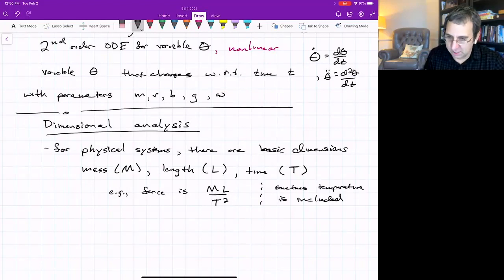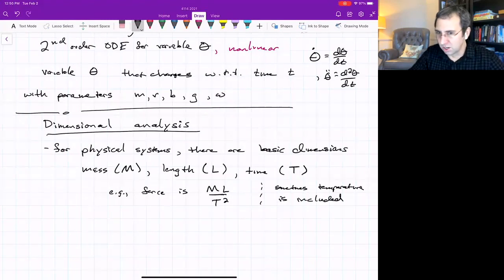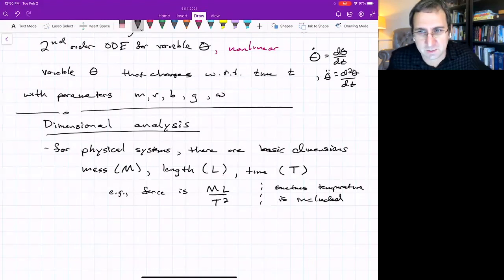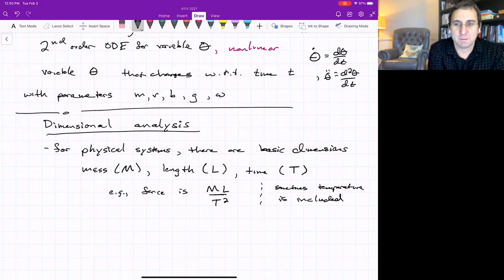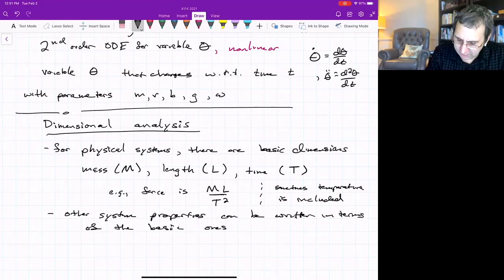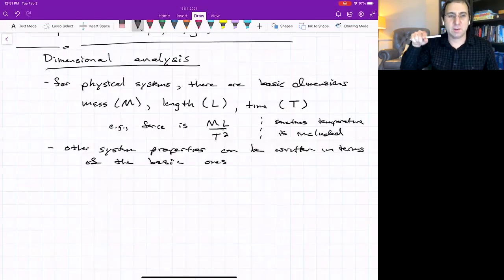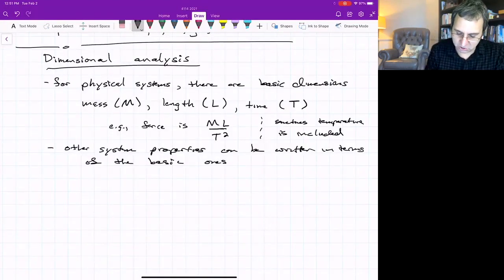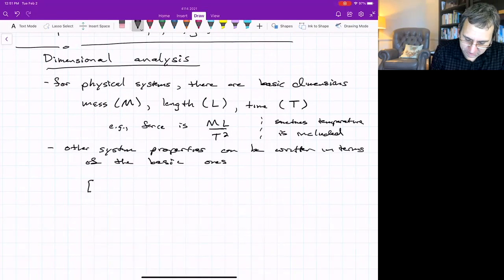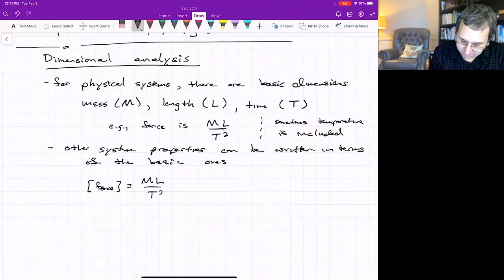We're thinking of things that come from science and physics. You might say, well, what about dollars for studying a financial system? As this force example tells us, other system properties can be given in terms of these basic ones, like force. And I will use this symbol of square brackets to denote dimension. So, for example, dimension of force are M mass times length over time squared.